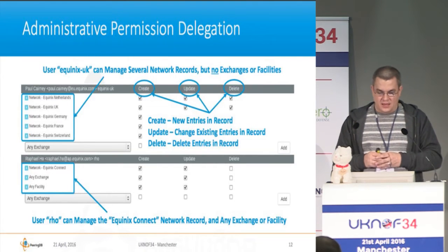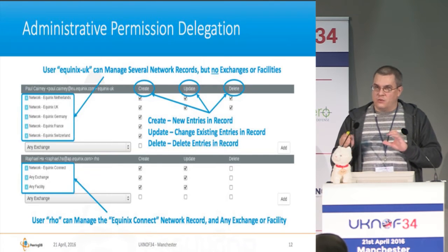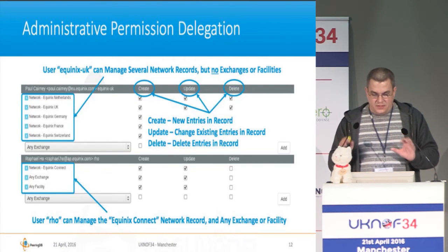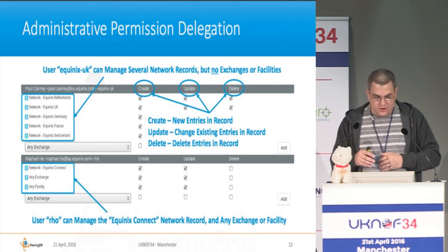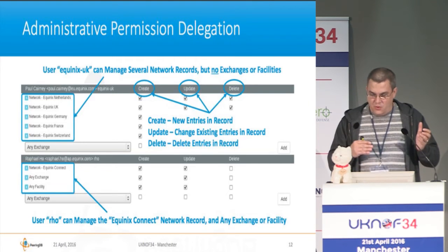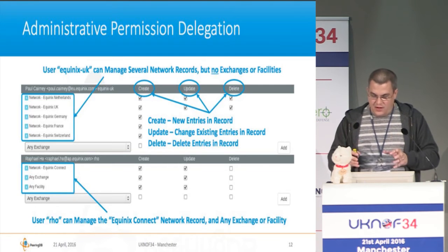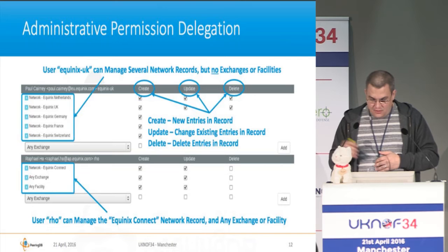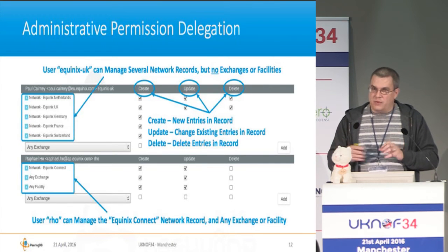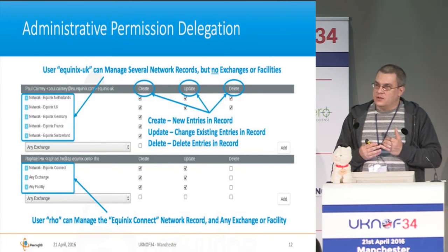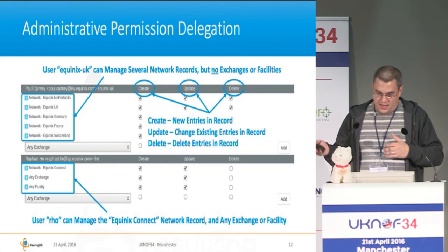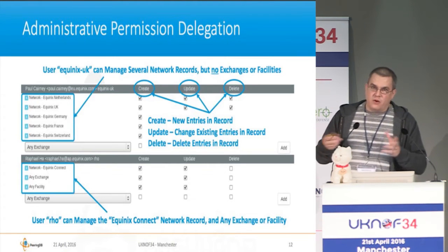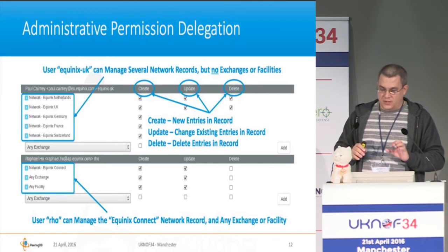Here's a great example that Equinix has. They did a lot of work with permissions because they have many different regions, networks, and facilities. They set it up so particular users only have access to particular things. For instance, the Equinix UK user can manage network records but no exchanges or facilities, while Raphael can manage a particular network record and also the exchanges and facilities. There are even sub-permissions for create, update, and delete, so you can have users who can update information but not create or delete it.